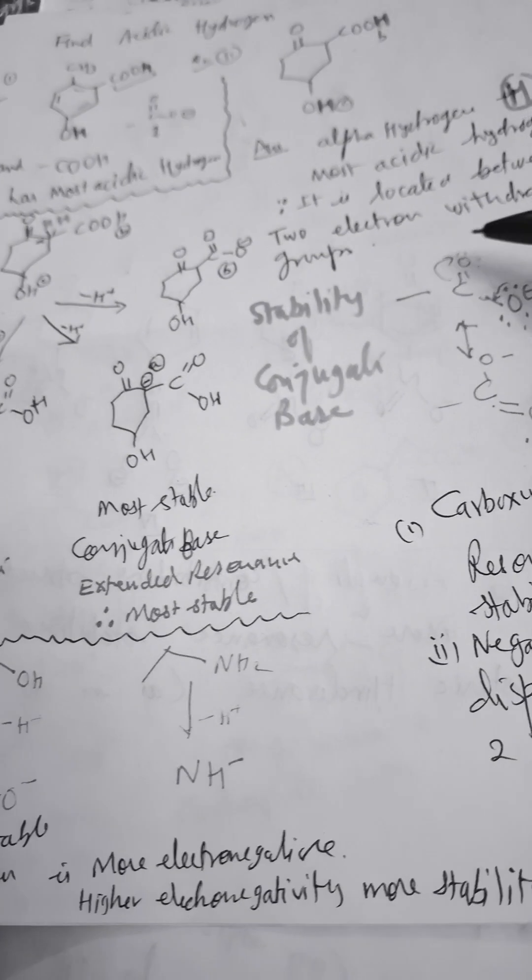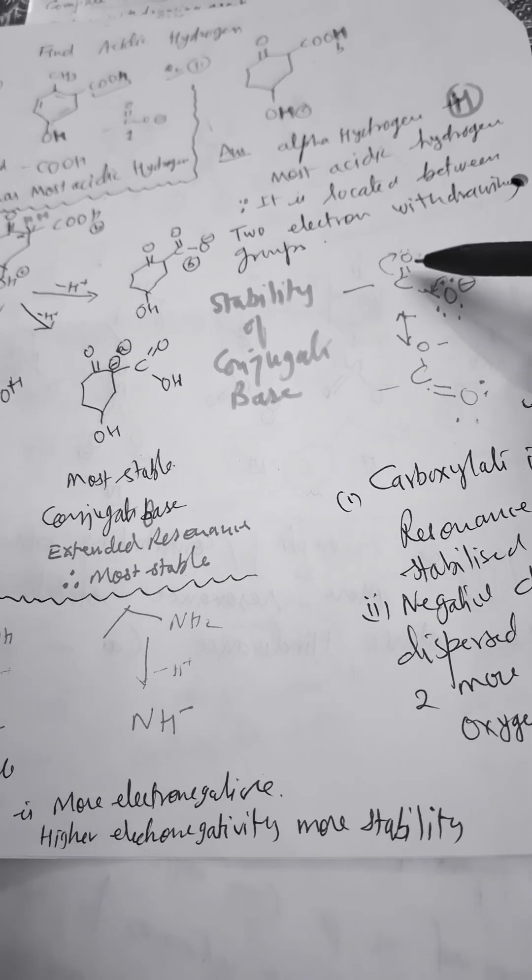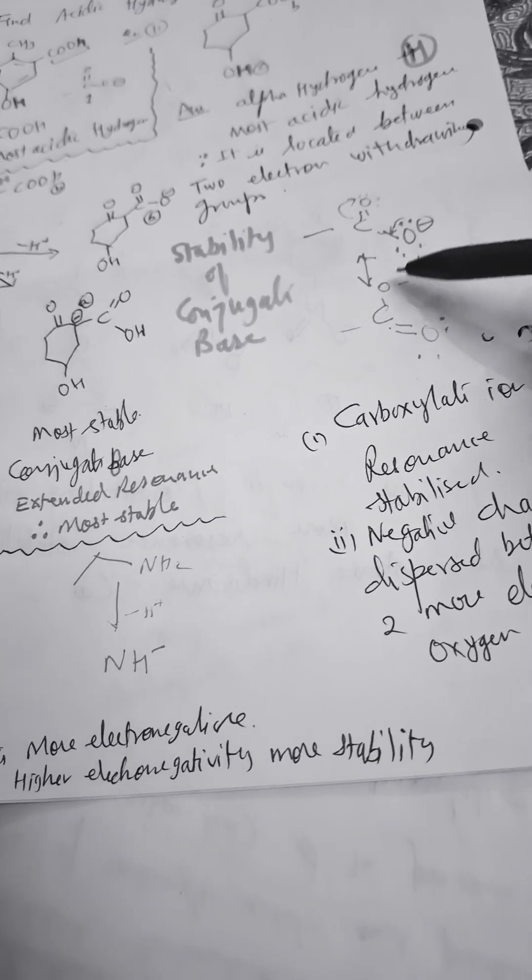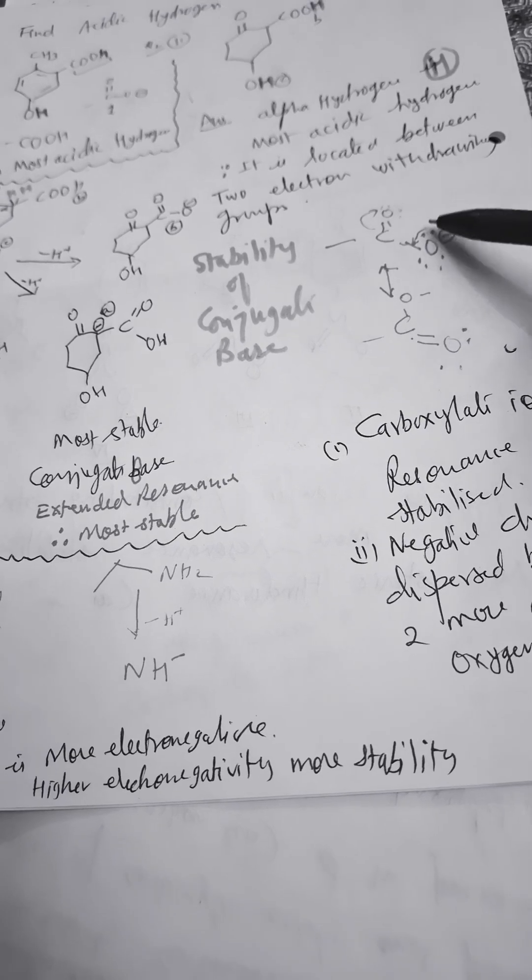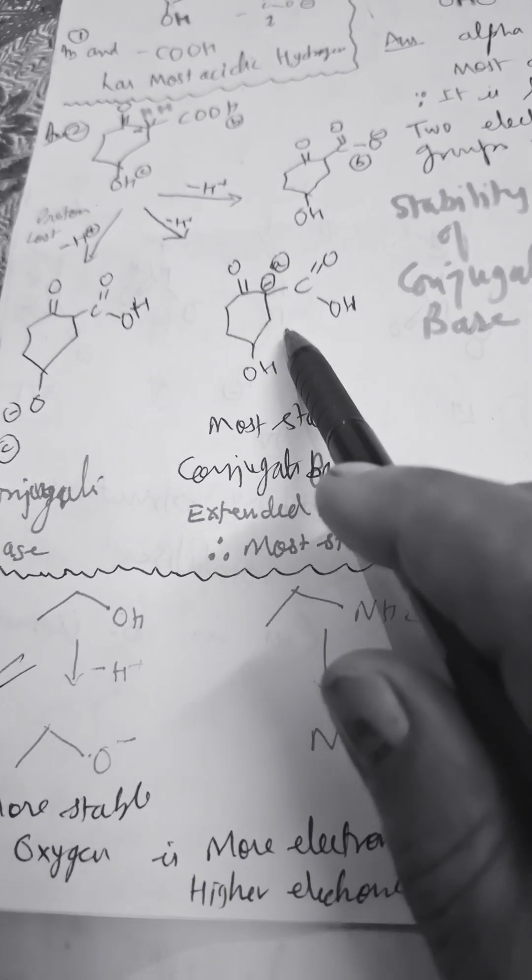Carboxylate ion is not an aromatic compound, so the resonance is limited between two oxygen atoms. The negative charge is dispersed between two oxygen atoms only.